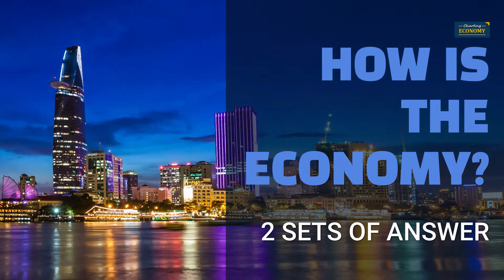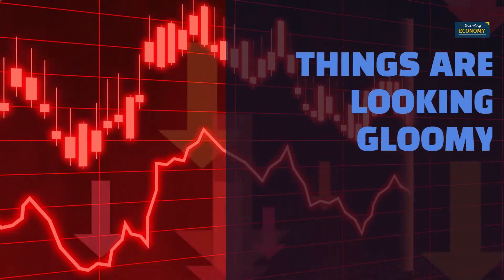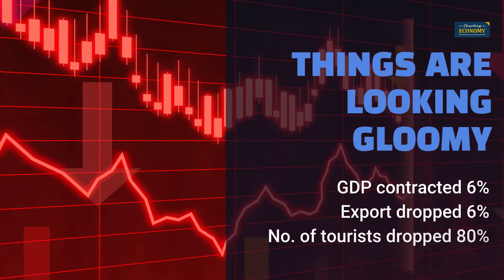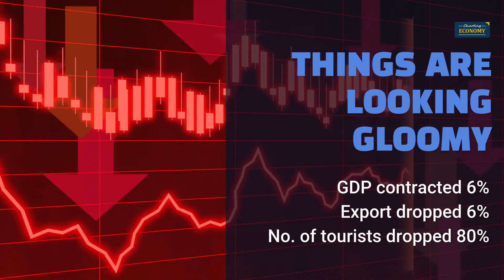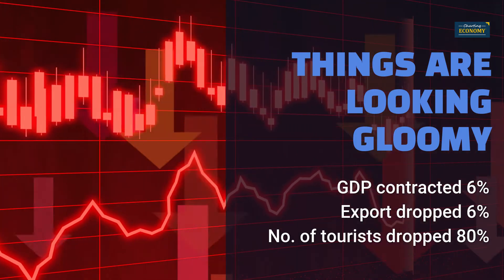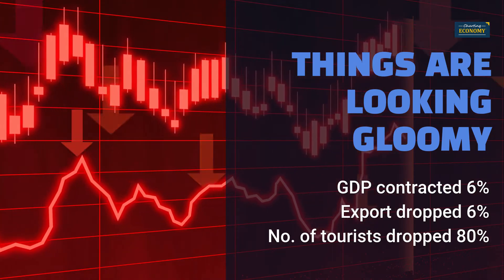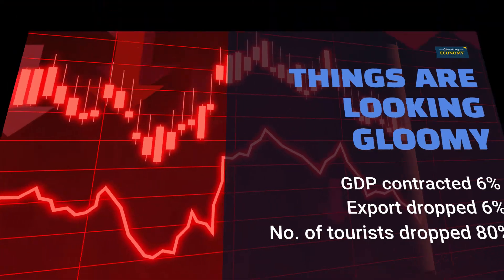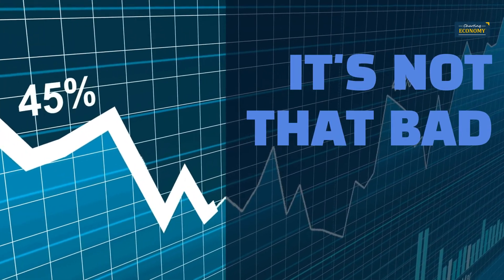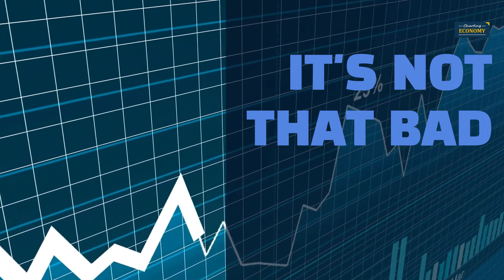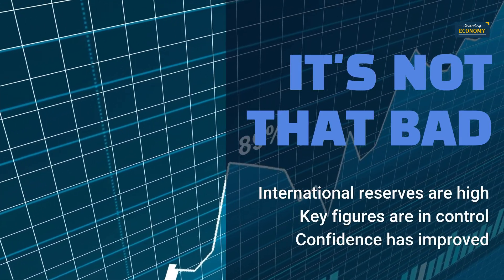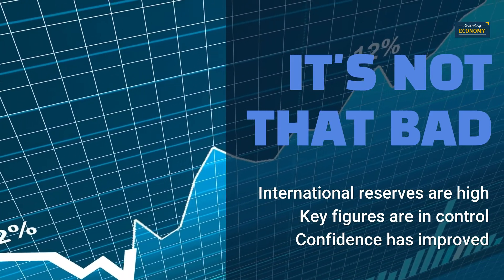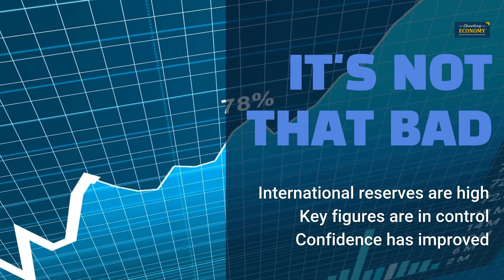Let me give you two sets of answers. The economy is poorly affected by the COVID crisis. It contracted more than 6% last year. Exports dropped by 6%, and the number of tourists dropped more than 80%. Things are looking gloomy. Alternatively: the economy contracted less than others amid the COVID crisis. International reserves are still high. Public debt, unemployment, and inflation are in control. Consumer confidence has improved from its lowest point. Things are not that bad.